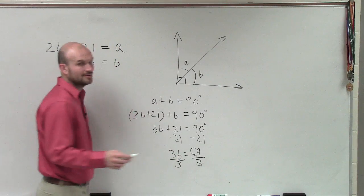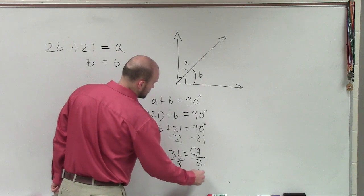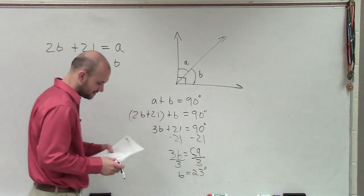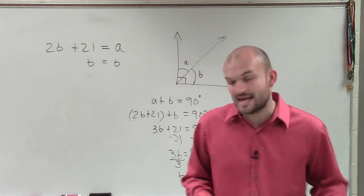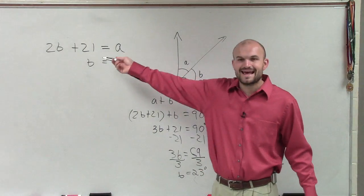And that's going to be, anybody, anybody, anybody? So that's going to be 23 degrees. But they said, find the measures of the angles. So if B equals 23 degrees, what is A going to equal?